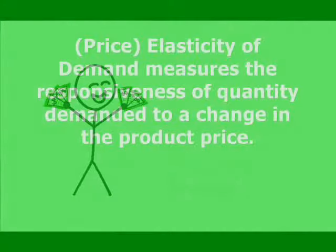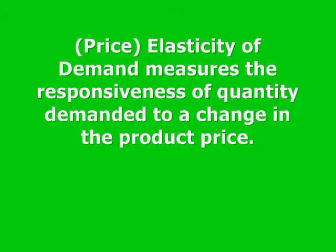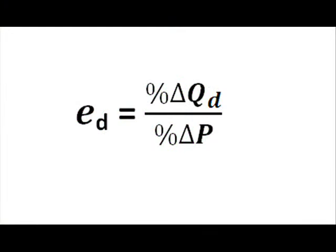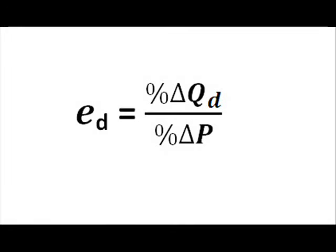Elasticity is a measure of sensitivity or responsiveness to price. In equation form, the elasticity of demand, or ED, is equal to the percentage change in quantity demanded over the percentage change in price. Because demand exhibits an inverse or negative relationship, elasticity of demand will be a negative number. However, I use percentage change to measure elasticity rather than absolute change.